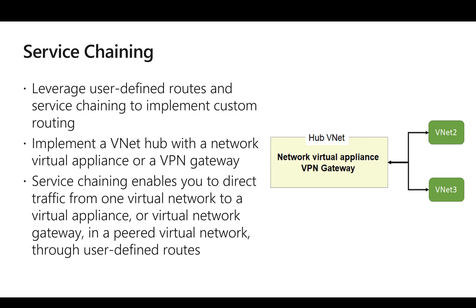Service chaining is helpful in hub-and-spoke topology scenarios where we have a hub VNet acting as the central virtual network for all resources to connect to. We deploy devices like a firewall — the network virtual appliance — or a VPN gateway in the hub. Traffic is filtered in the hub and then passed on to the right virtual network.